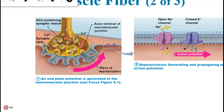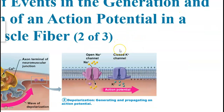The acetylcholine binds to the chemically gated sodium channels — they are chemically gated because they are stimulated to open by acetylcholine binding to them. Sodium begins to come into the muscle fiber. The voltage was negative; sodium is positive, so it changes the voltage to a more positive value. That is called depolarization — changing the voltage from negative to positive on the inside of the muscle fiber. If the depolarization is large enough, it will stimulate an action potential that will cause the muscle fiber to contract.